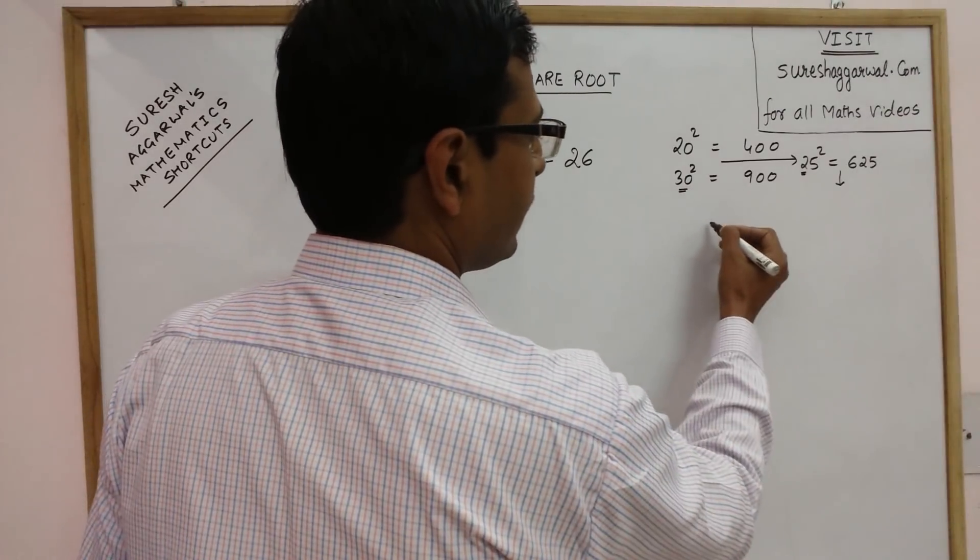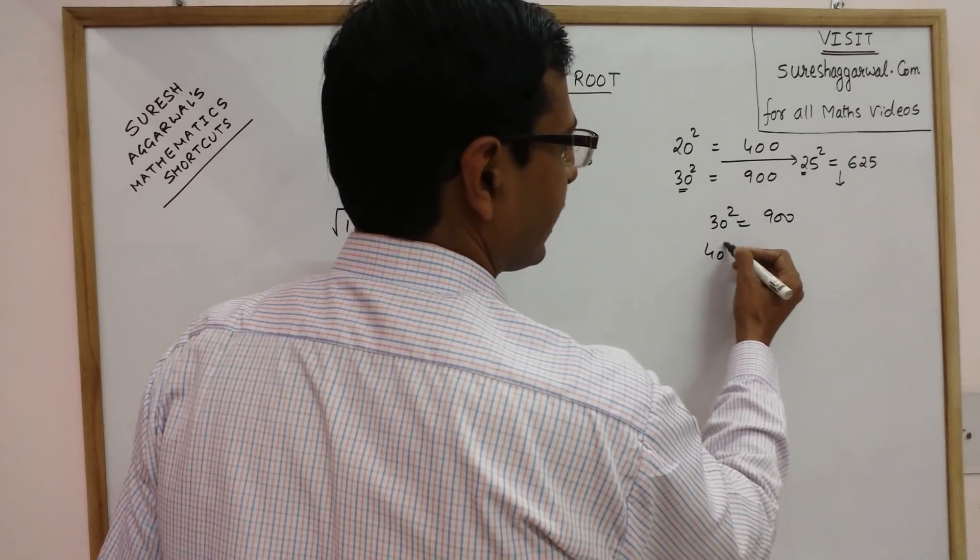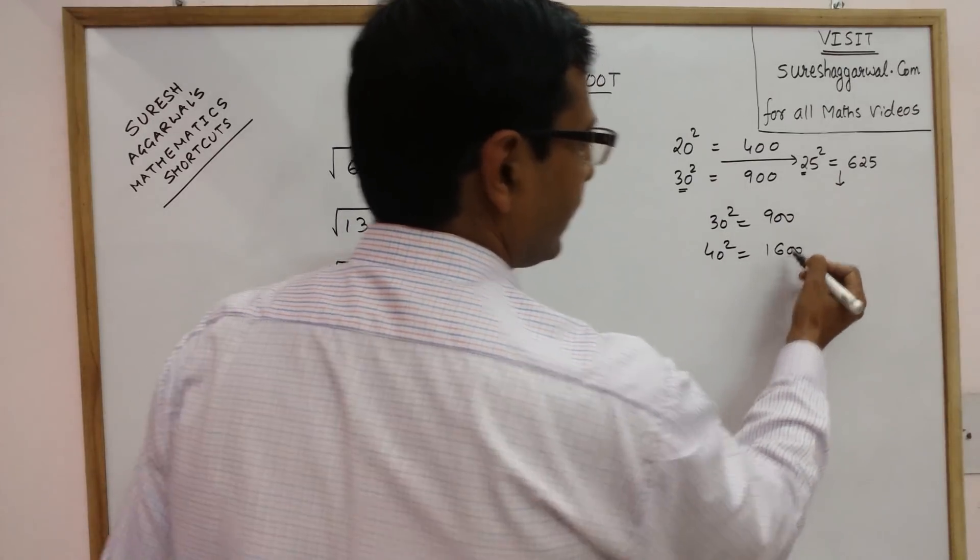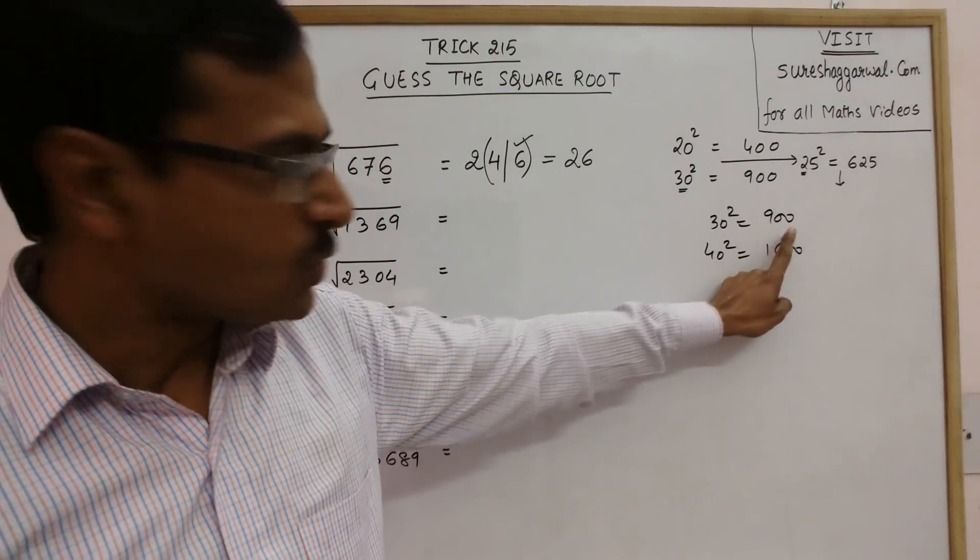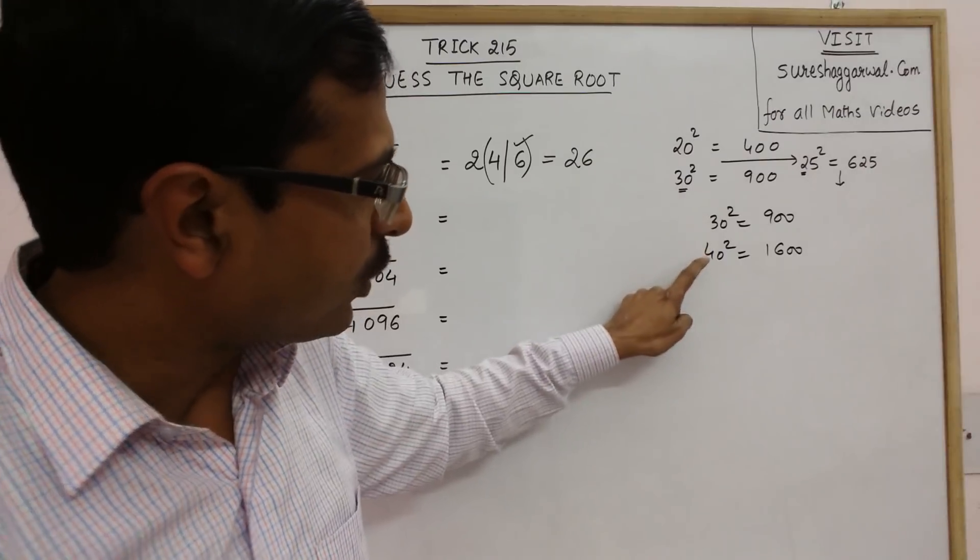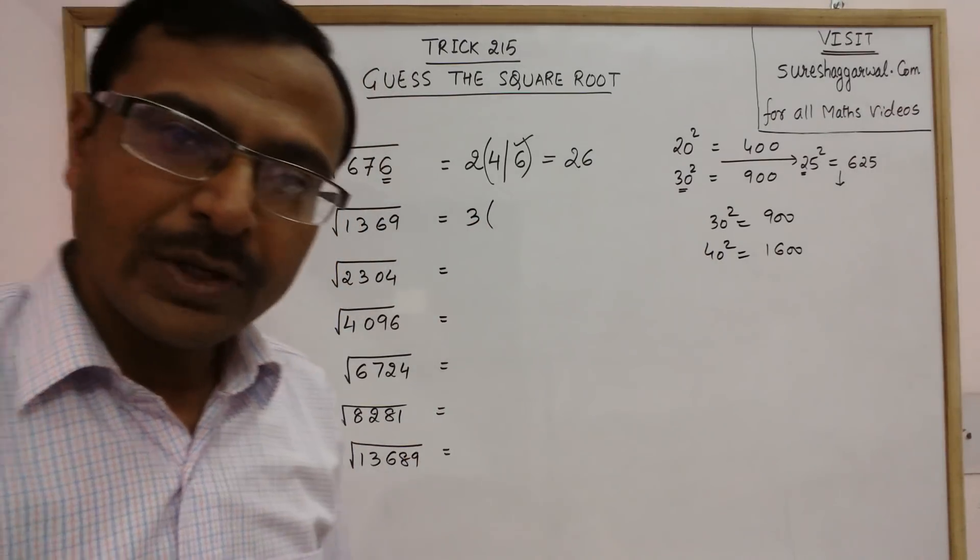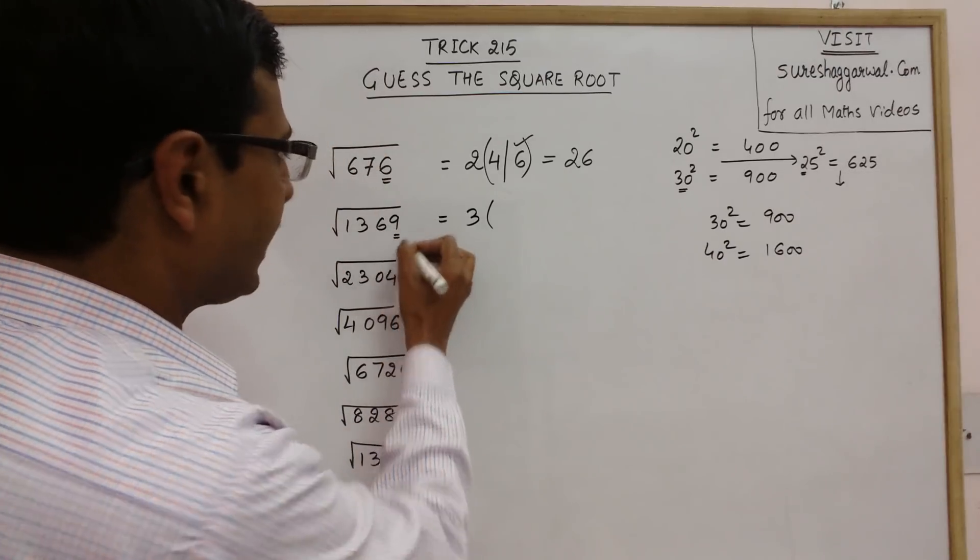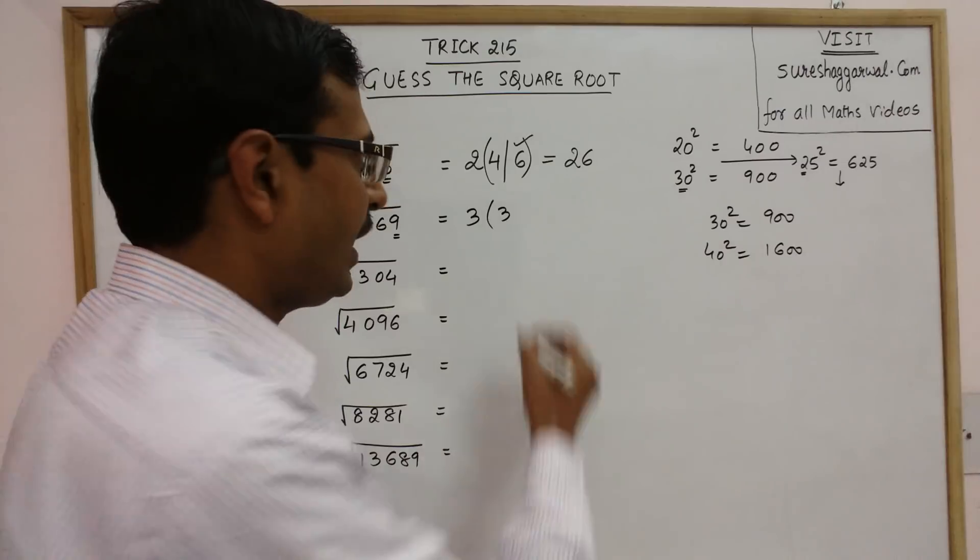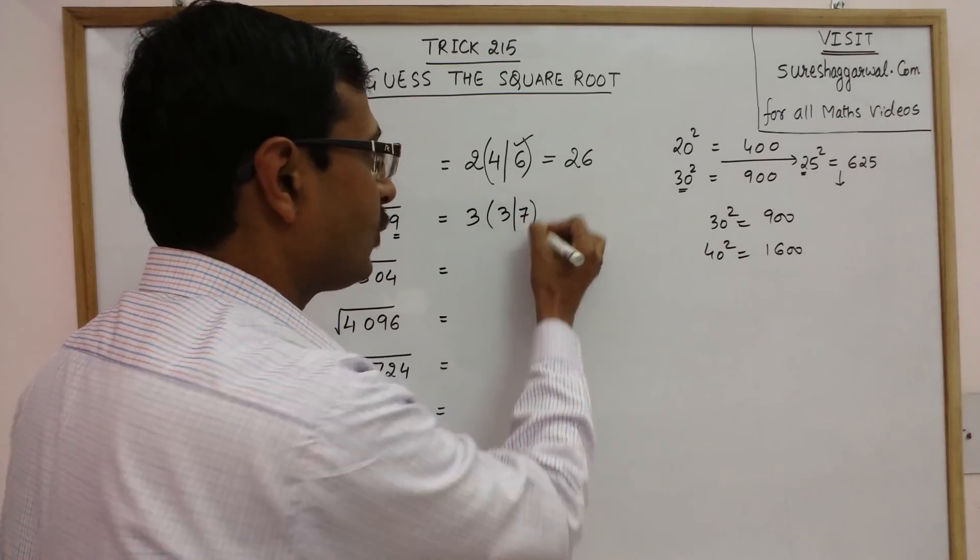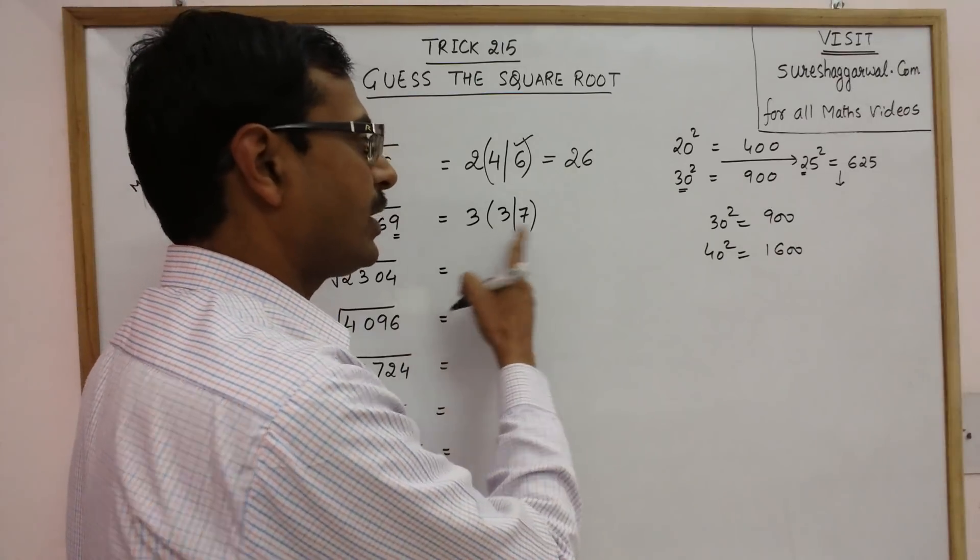1369, now see 30 square is 900 and 40 square is 1600. So our answer 1369 lies between these two numbers. So 30 and 40, between 30 and 40 all numbers start with 3. Now come to the next digit. See the unit place here, 9. So 3 square is 9 and 7 square is 49, so again 9. So either our answer is 33 or it is 37.